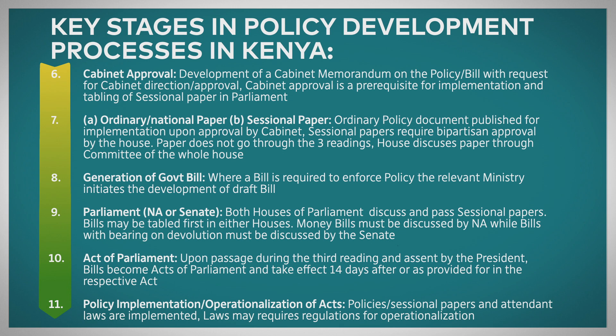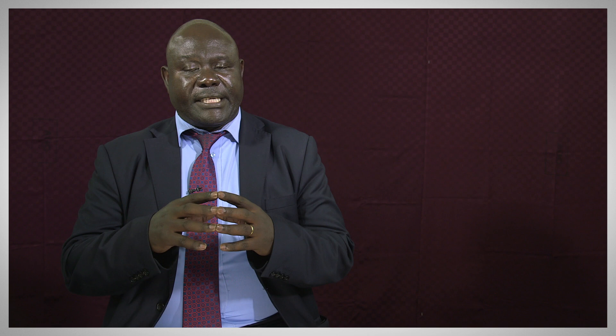Further to what we have just learned about the policy processes, I want to make a further distinction. Policies that generate just an ordinary sessional paper to parliament are those that can be implemented within the existing government frameworks or within the existing actual allocation of resources. The policies that go to make bills are those that will need new legal frameworks and may even need the creation of new institutions. After a bill is discussed in parliament and is enacted, there will be a need for preparation of new regulations and guidelines on how that act will be implemented.